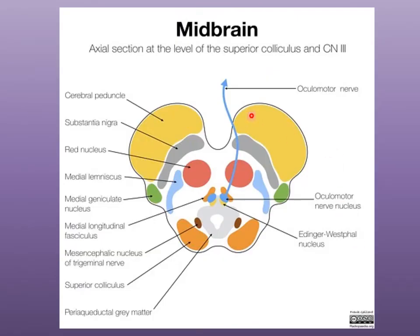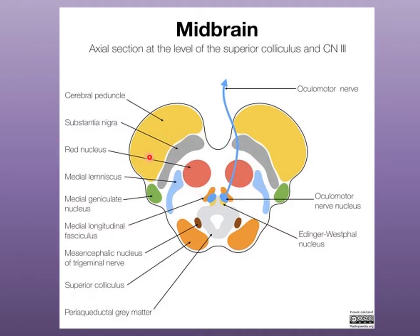An adult transverse section of the midbrain shows the cerebral peduncles, the band of gray matter that is the substantia nigra, the red nucleus, the oculomotor nucleus, and the Edinger-Westphal nucleus at the level of the superior colliculus. The part where the colliculi are located is called the tectum, the basal plate nuclei are in the tegmentum, and the crura cerebri form the cerebral peduncles.